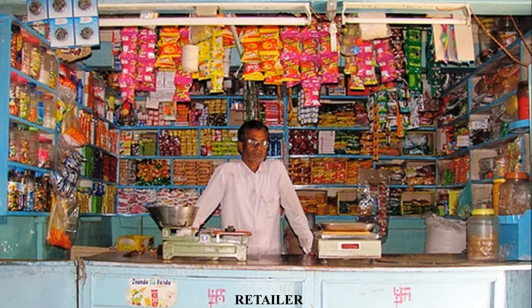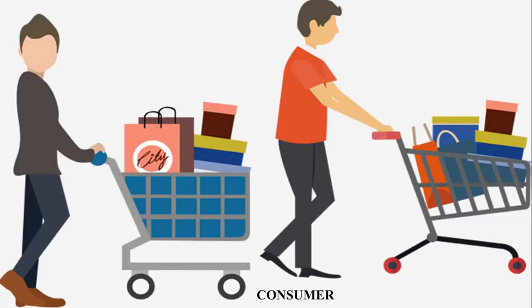Now, retailer. Students, retailer is the person who buys goods from the wholesaler and sells in small quantities. And finally, consumer. Consumer is the person for whom the goods or products have been made and who pays money to buy and use them.